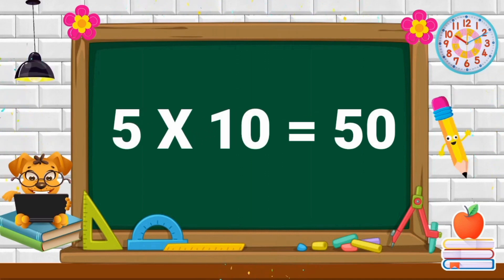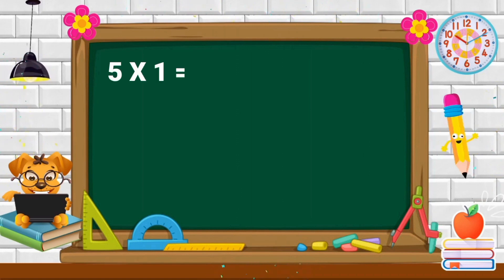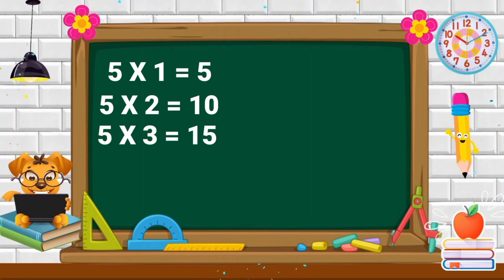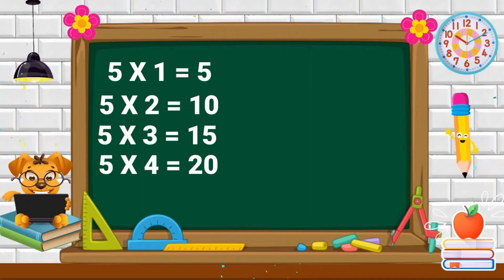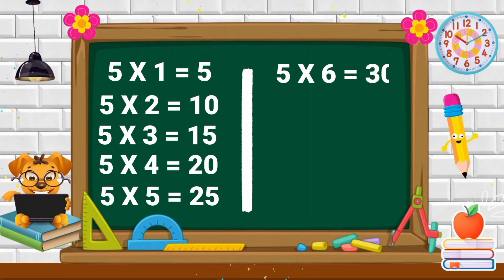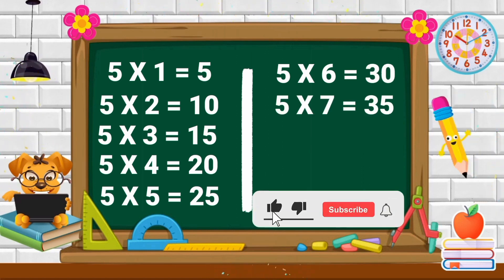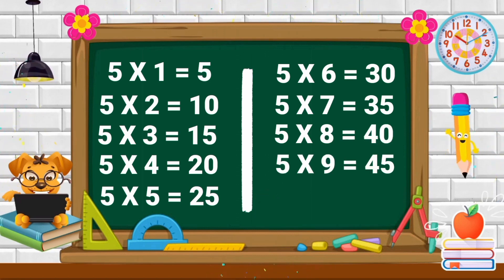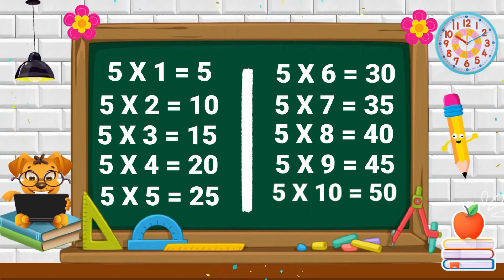5 tens are 50. Repeat again. 5 ones are 5. 5 twos are 10. 5 threes are 15. 5 fours are 20. 5 fives are 25. 5 sixes are 30. 5 sevens are 35. 5 eights are 40. 5 nines are 45. 5 tens are 50.